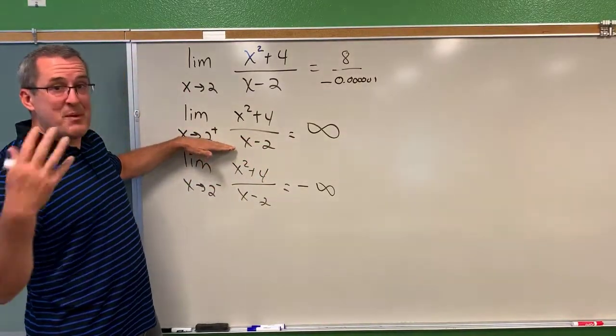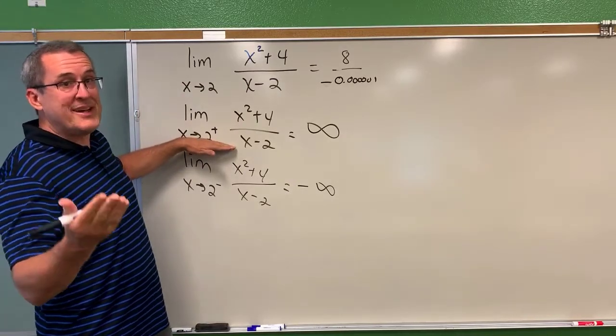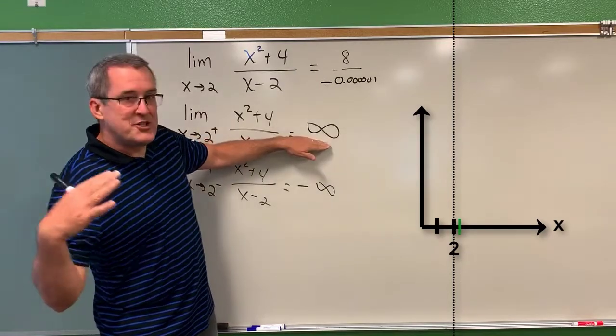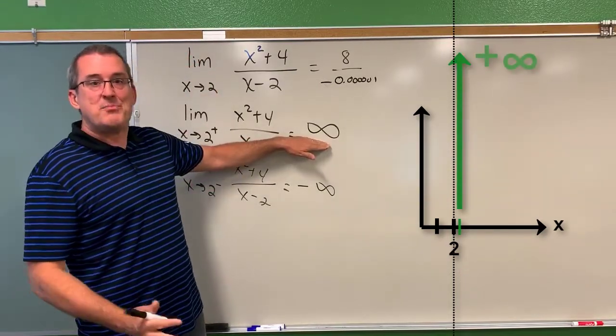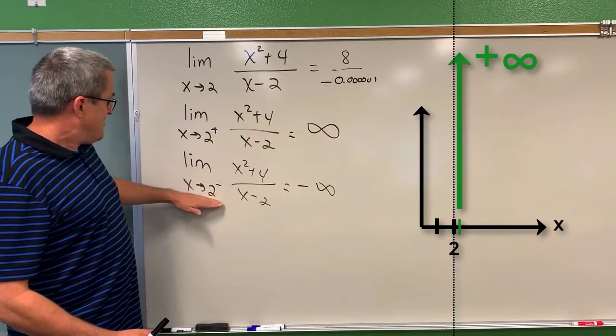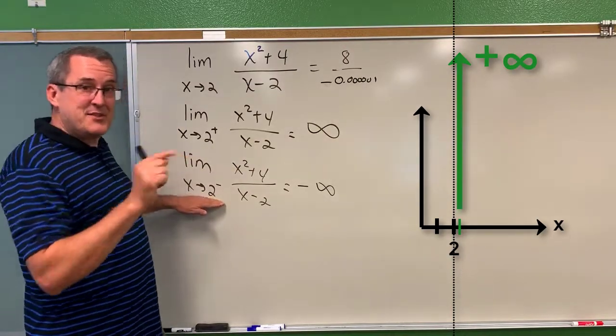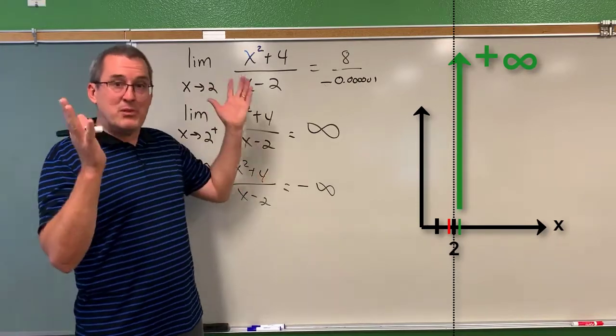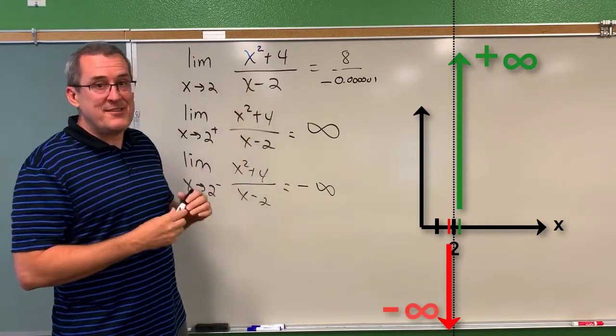as x approaches 2 from the positive side of 2, or the right side of 2, or values slightly larger than 2, that function just exploded and went off to positive infinity. When x approaches 2 from the left side of 2 for values slightly less than 2, that function blew up, but to a negative infinity.